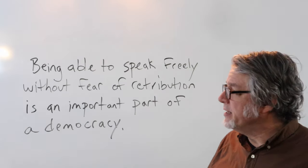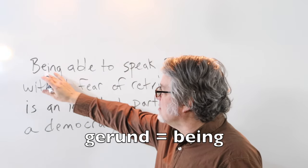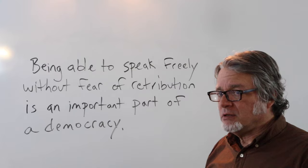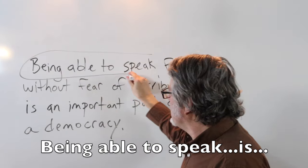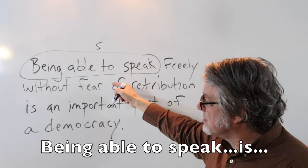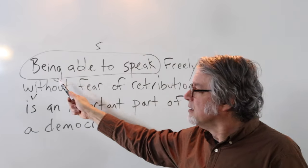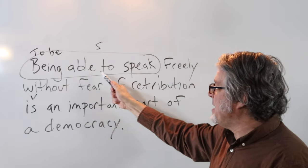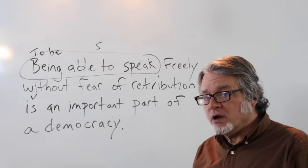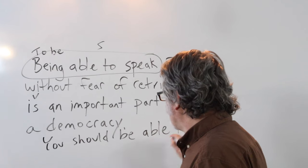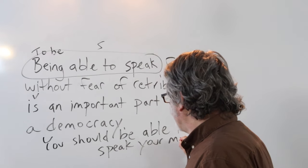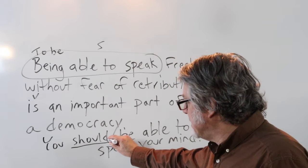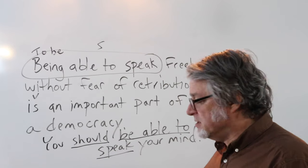In this sentence, be able to is part of a gerund starting with being: 'Being able to speak freely without fear of retribution is an important part of a democracy.' All of 'being able to speak' functions as the subject of the sentence. You can also use an infinitive instead — replace being with to be: 'To be able to speak freely without fear of retribution is an important part of a democracy.' You should be able to speak your mind — here's the modal verb should, then be able to, then the main verb speak.